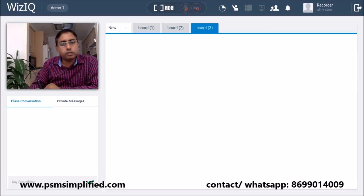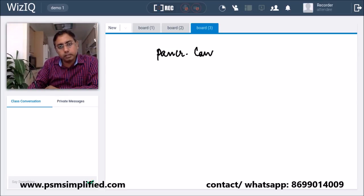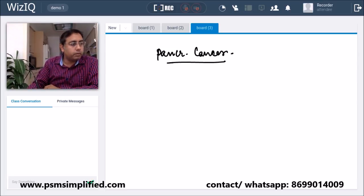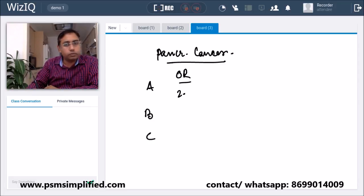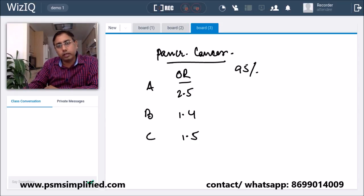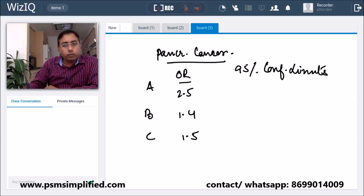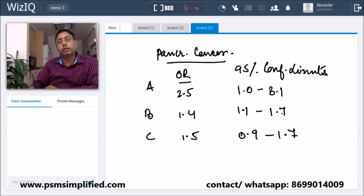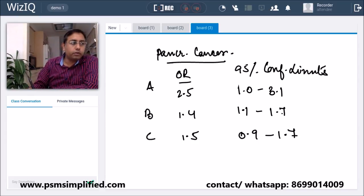The values are given for pancreatic cancer as follows: Group A, Group B, and Group C. The odds ratios given are 2.5, 1.4, and 1.5, and the 95% confidence intervals are 1.0 to 3.1, 1.1 to 1.7, and 0.9 to 1.7 respectively.